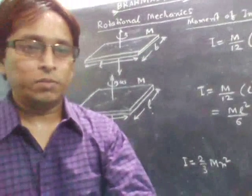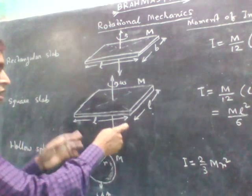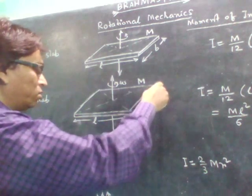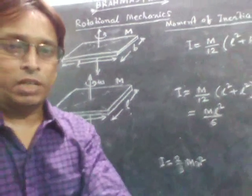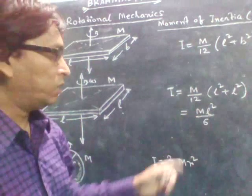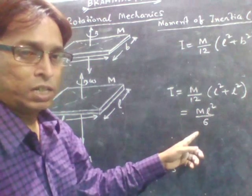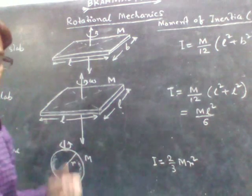And if it is a square slab. If the length is L and its breadth is L also, then the formula will be the same. But here M by 12 L square plus L square. That means M by 12 into 2 L square. That will give you M L square by 6, where M is the mass of this slab.